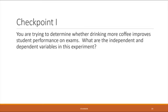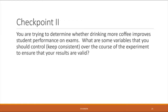This brings us to our first extra credit checkpoint question. You are trying to determine whether drinking more coffee improves student performance on exams. What is the independent variable and what is the dependent variable if you were to design an experiment to test this question? Pause the lecture, write down your answer, then resume. Checkpoint two: in the same experiment about coffee and exam performance, what are some variables you would want to control or keep consistent across test subjects to ensure valid results and a true connection between coffee and exam performance?